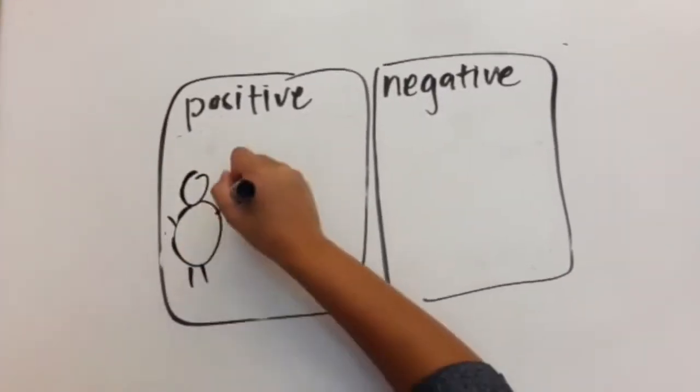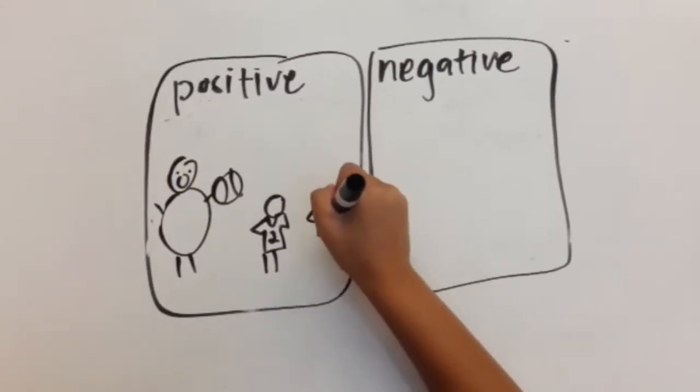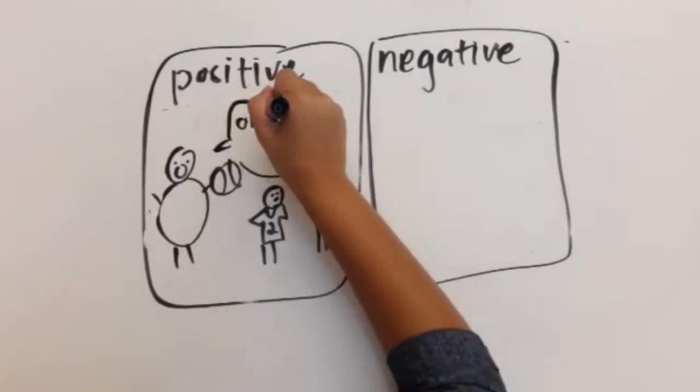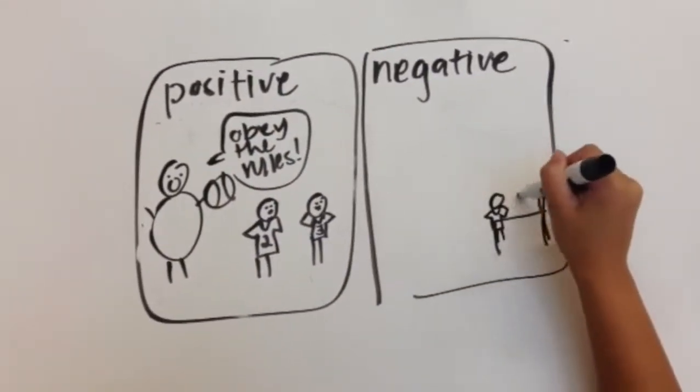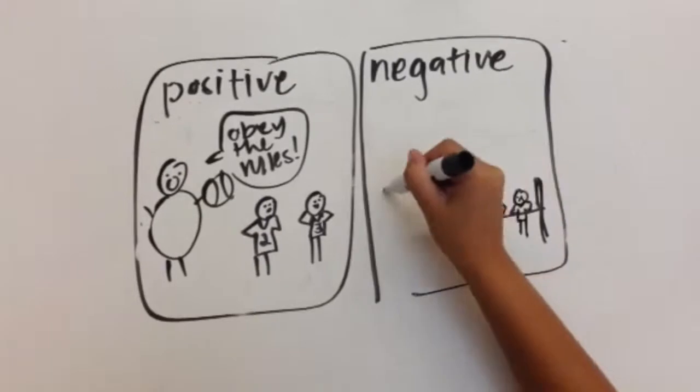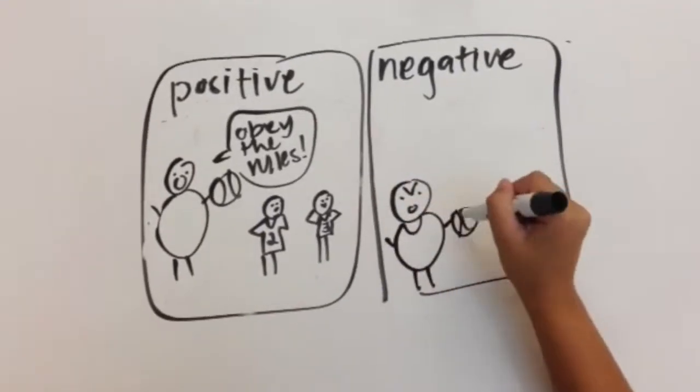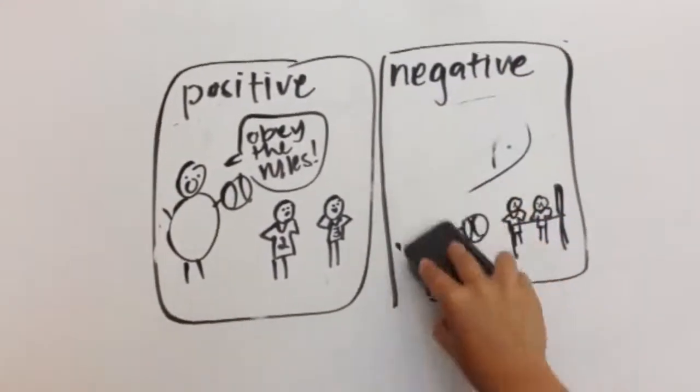A positive incentive could be a coach told each team member that if they were always on time to class, maintain their GPA, didn't miss practice or a game, then they will be able to play in the following game. The negative incentive to that is a couple team members disobeyed the rules and did not play in the game.